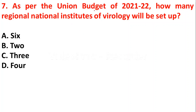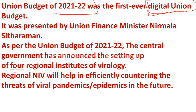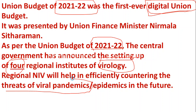Question seven: as per the Union Budget of 2021-22, how many regional national institutes of virology will be set up? Option A: 6, option B: 2, option C: 3, option D: 4. The right answer is option D — 4. The Union Budget 2021-22 was the first ever digital union budget, presented by Finance Minister Nirmala Sitaraman. The government announced setting up four regional NIVs to efficiently counter threats of viral pandemic in the future.